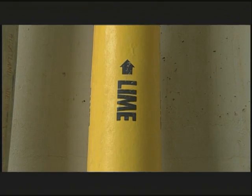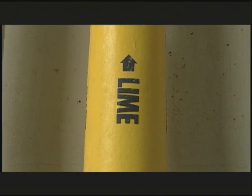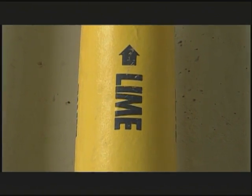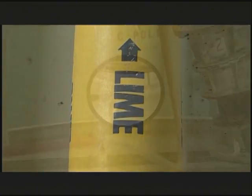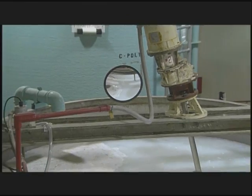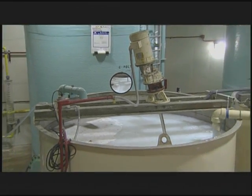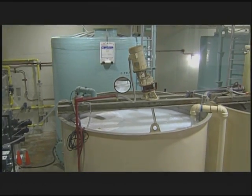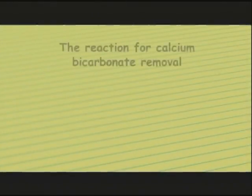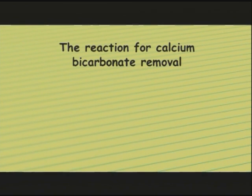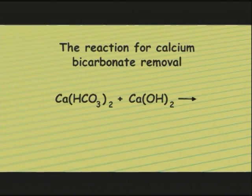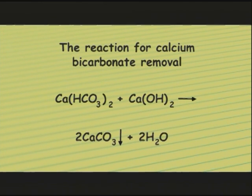In addition, lime raises the pH because it releases hydroxide into the water. During treatment for carbonate hardness, lime is the only softening chemical needed. This is the reaction for calcium bicarbonate removal. Here, calcium hydroxide, or slaked lime, is added to calcium bicarbonate to form calcium carbonate, which is relatively insoluble and precipitates out.